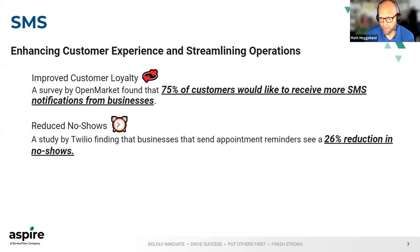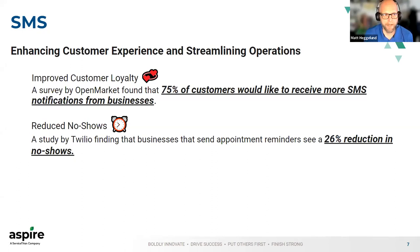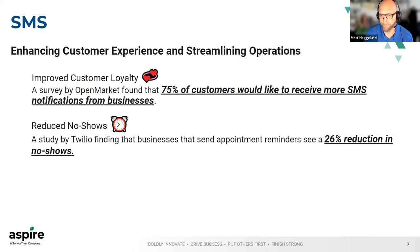Reduce no-shows: a study by Twilio found that businesses that send appointment reminders see a 26% reduction in no-shows. Leveraging advance notice — saying, hey, we're going to be here tomorrow to complete this service, please reach out and let us know if you need to reschedule — proactively gets ahead of those no-shows. For example, irrigation type work where you need to get into a home, giving advance notice so if something comes up, they're able to reach out and let you know they won't be home.